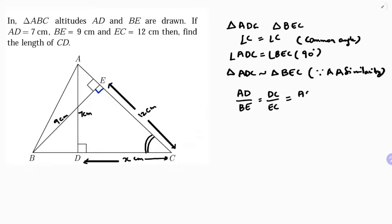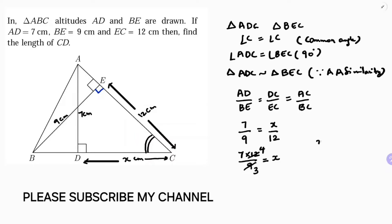...equals DC over EC. Substituting the values: AD is 7 centimeters, BE is 9, DC is X, and EC is 12. Cross multiplying: 7 times 12 divided by 9 equals X. Simplifying: X equals 7 times 4, which is 28 divided by 3. So CD is 28 by 3 centimeters.